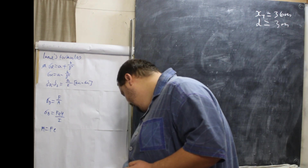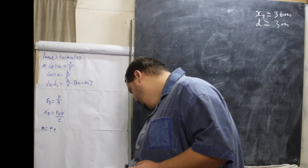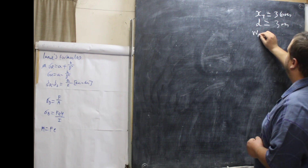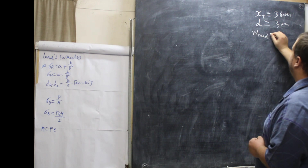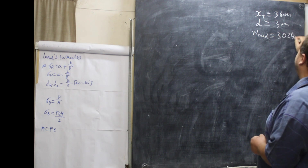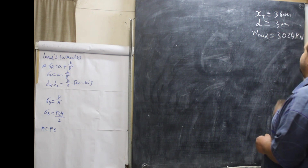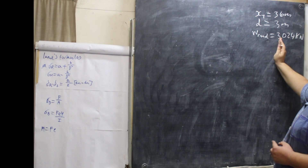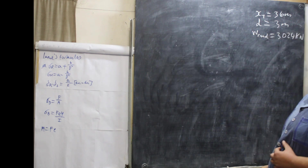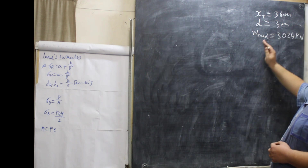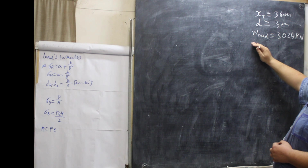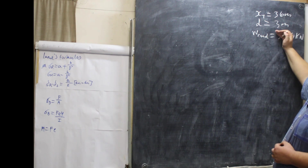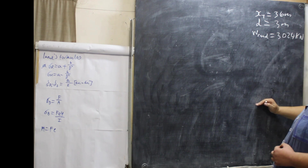The roadway has a total weight of 3024 kilonewtons. We always have our values to the right, and then we do our working out on the left. All our answers will be on the left-hand side, because each answer goes into the next sum.